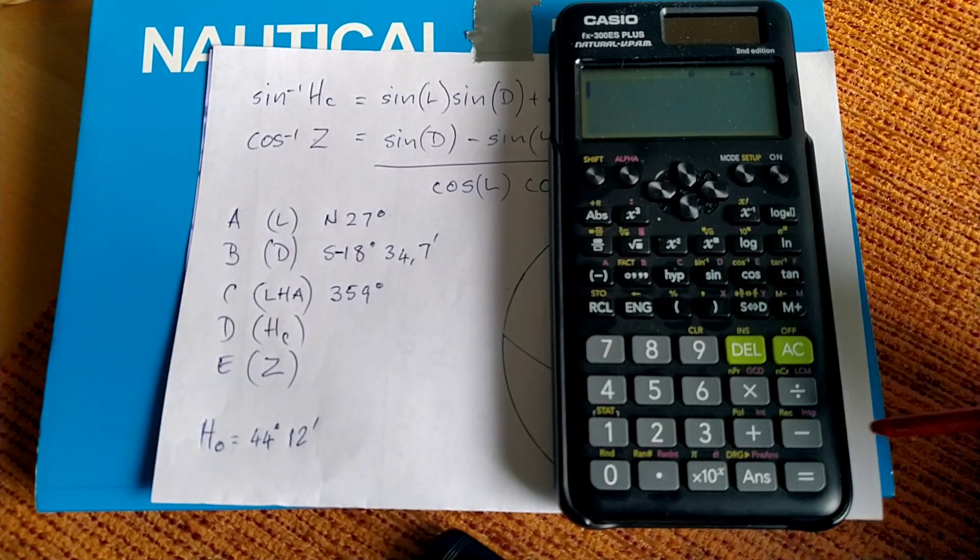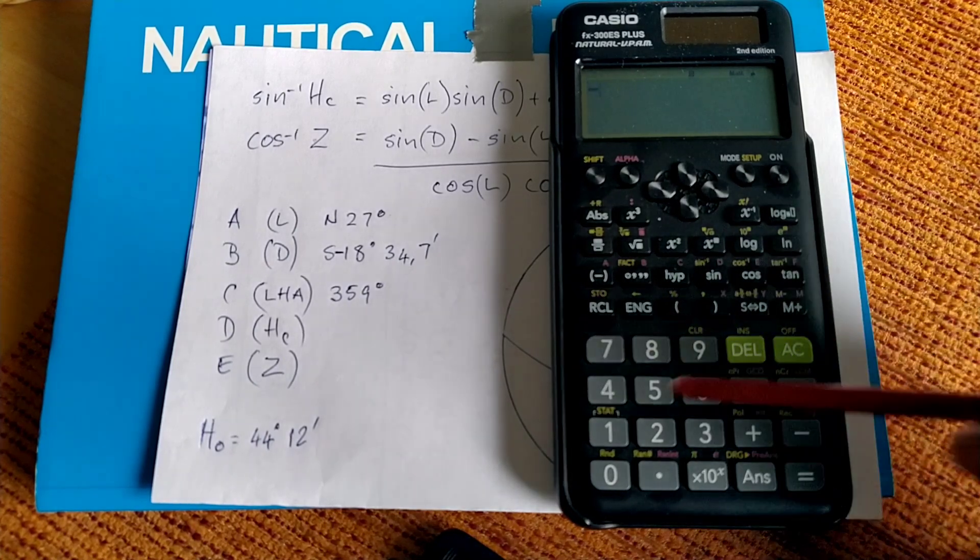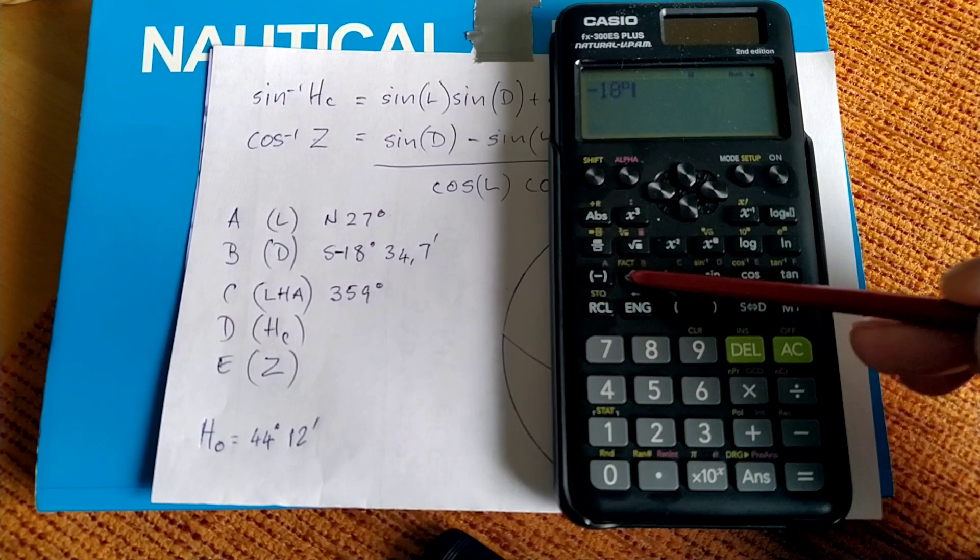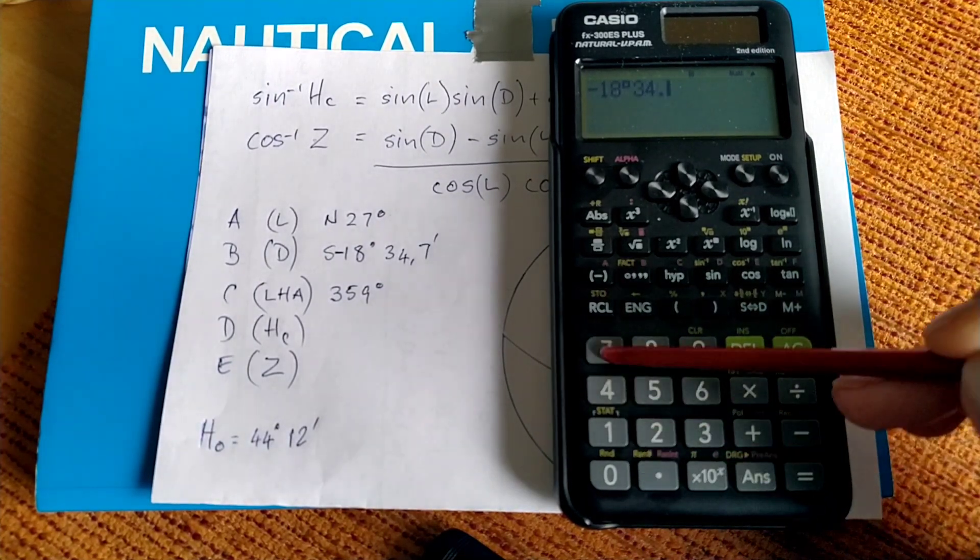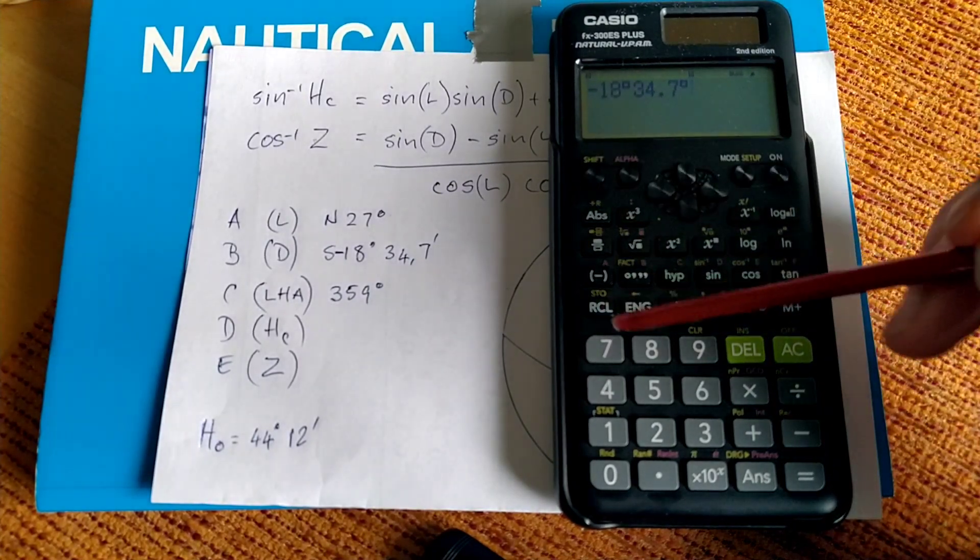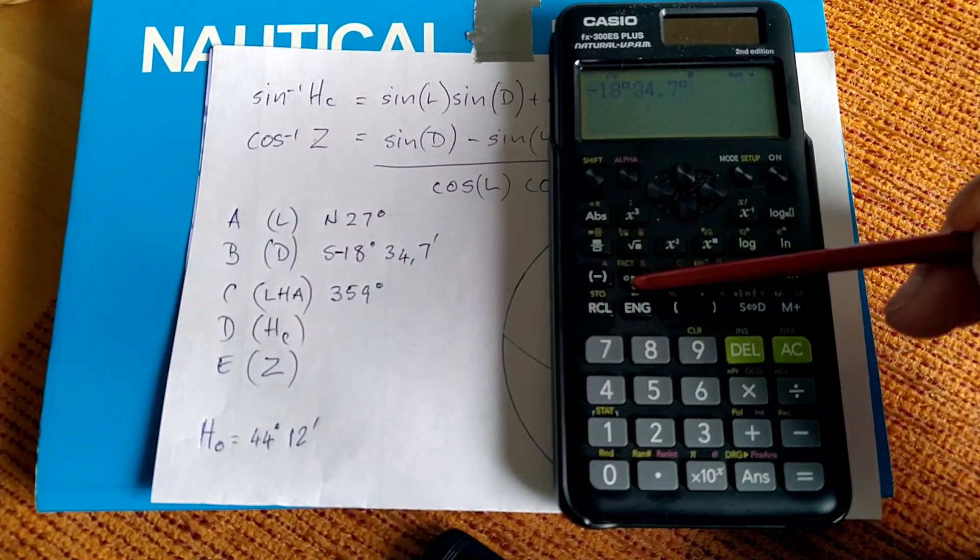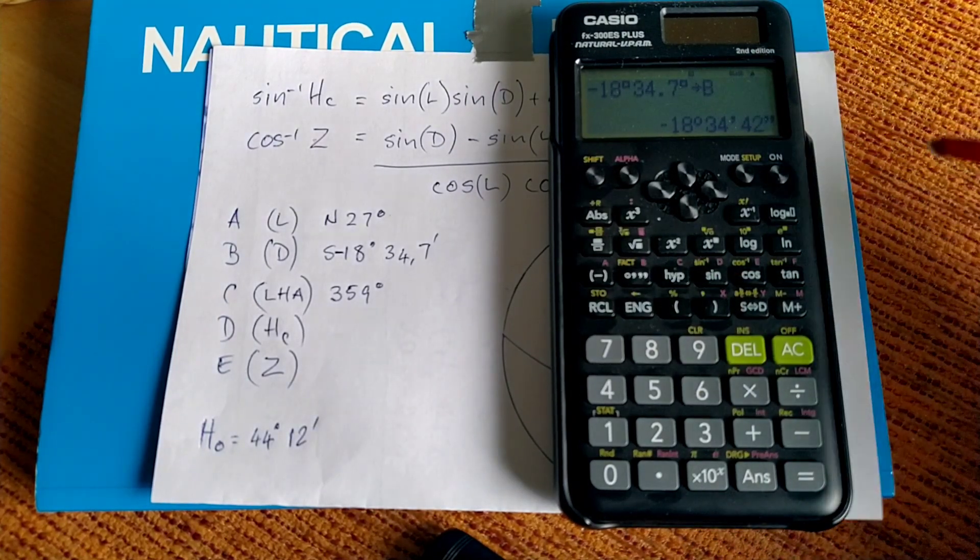Because we're dealing with a contrary name, declination, it's a negative number, negative 18 degrees, and 34.7 minutes. And we're going to assign that to variable B. So then we have our contrary name, declination, assigned to B.